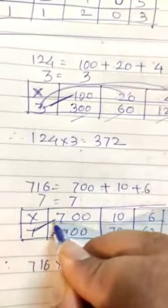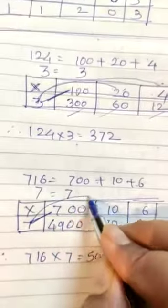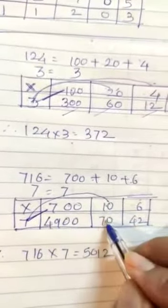Now multiply first this. Zeros, 2. 7 sevens are 49. Now here, zeros, 1. 7 ones are 7.